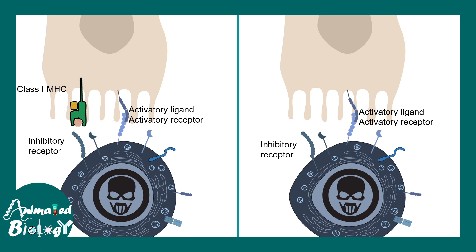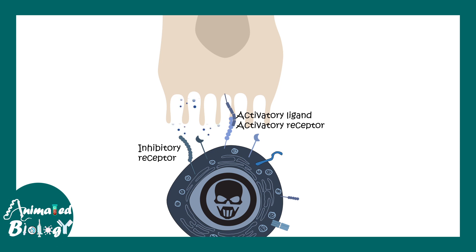NK cells generally scan any cell to engage. But this engagement is prevented by MHC class I and inhibitory receptor interaction. When the NK cell does not find a class I MHC molecule-bound peptide, it decides to engage with that particular cell and eventually secretes perforins and granzyme to kill and eliminate that cell.